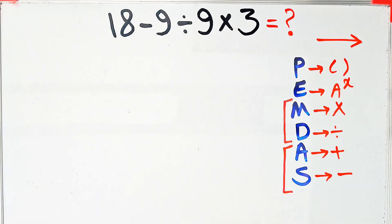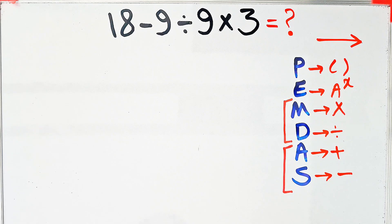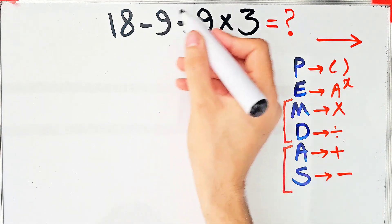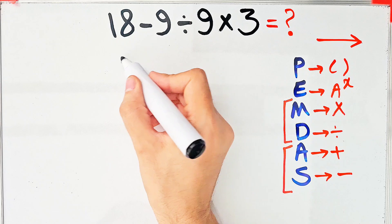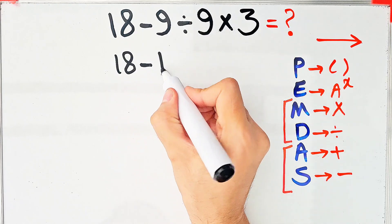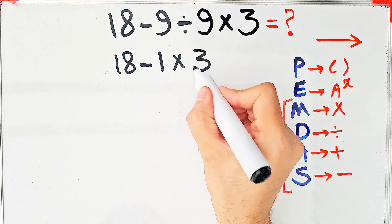According to the PEMDAS rule, in this question, first we simplify the division. 18 minus 9 divided by 9 then times 3. We have 18 minus 9 divided by 9 which equals 1 then times 3.